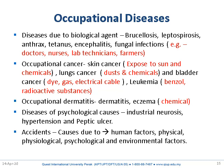Hypertension and peptic ulcer can also result from occupational psychological stress. Stress can lead to acid-peptic disorders. Occupational accidents are due to human factors — physical, physiological, psychological, and environmental factors. Human factors include mistakes and errors. Physical hazards like heat, cold, noise, and light can lead to fatigue and accidents.